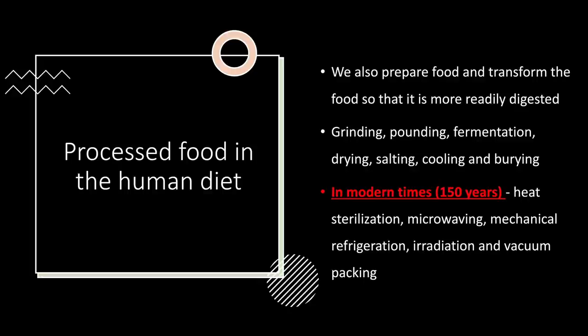When we get into processed food in the human diet, we prepare and transform food to make it more readily digested using methods such as grinding, pounding, fermentation, drying, salting, cooling, and burying. But in modern times — the last 150 years — we use very novel methods: heat sterilisation, microwaving, mechanical refrigeration, irradiation, and vacuum packing. Now we're so heavily processed that 80% of what general society consumes comes from something processed, and 90% of what is cooked definitely comes from processed food, which is a problem.